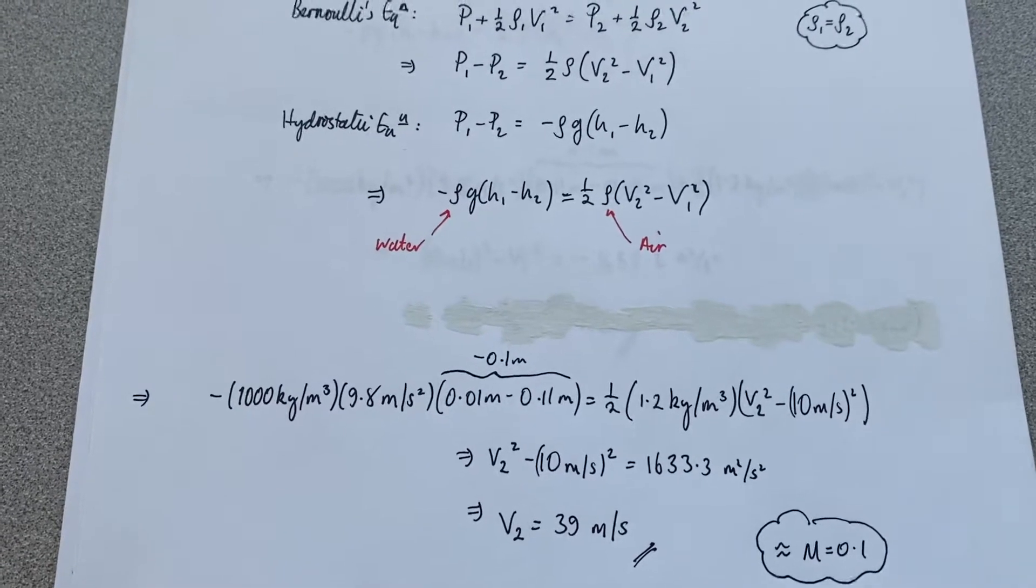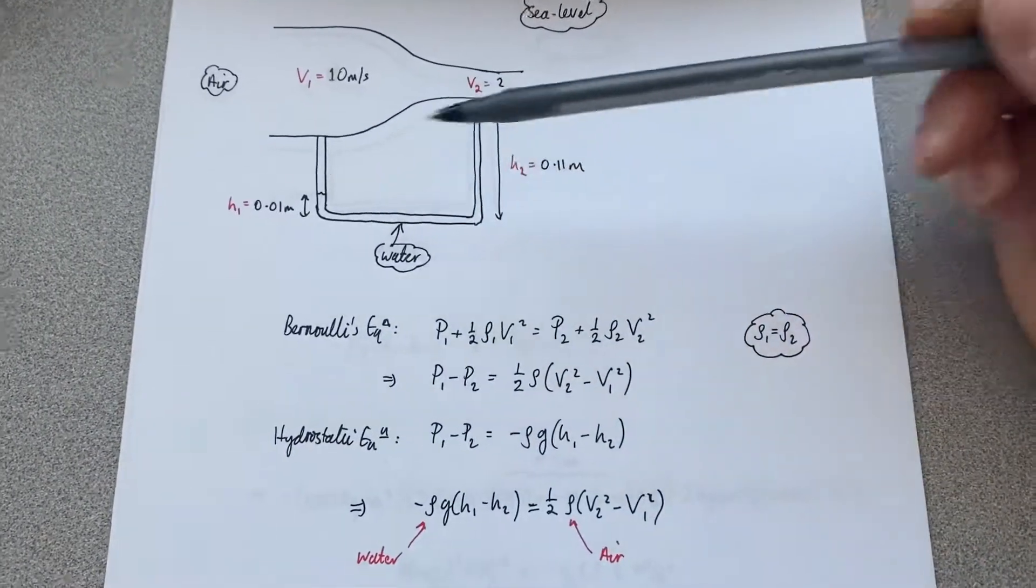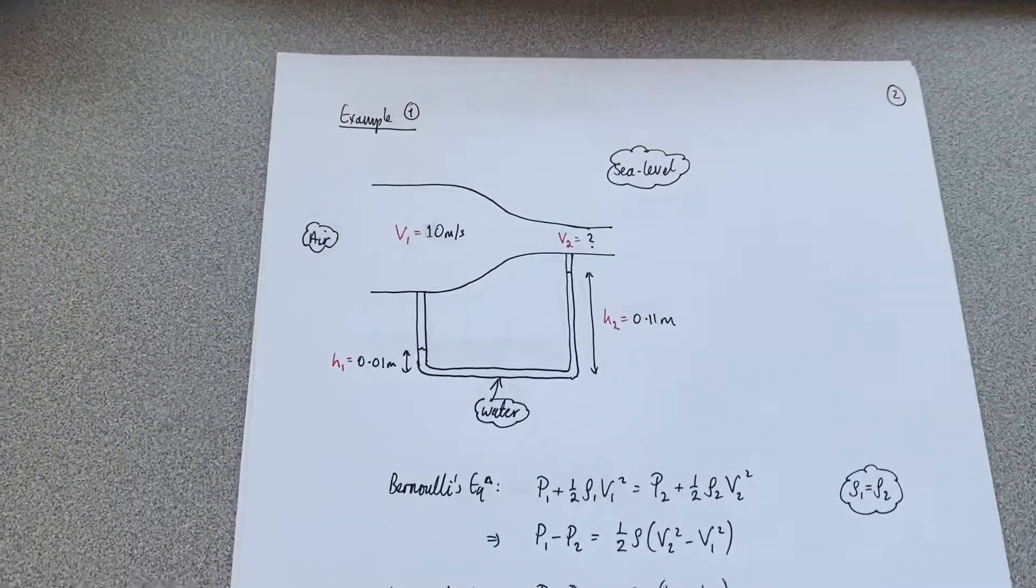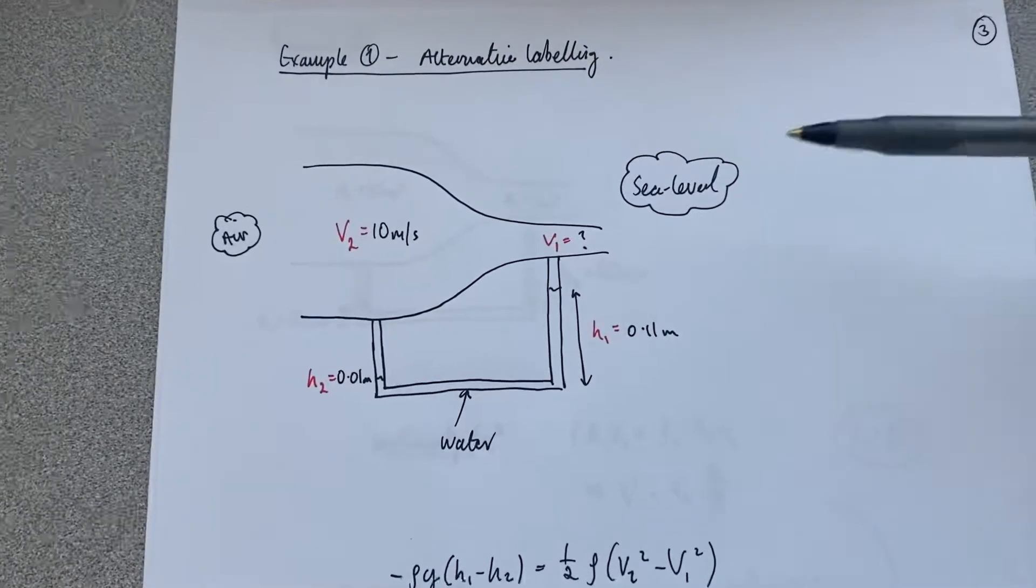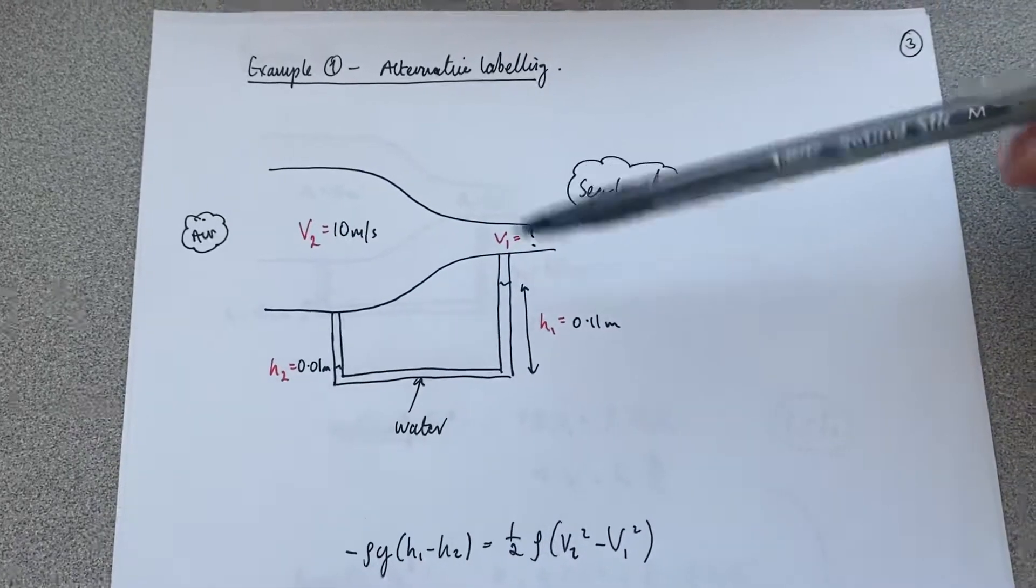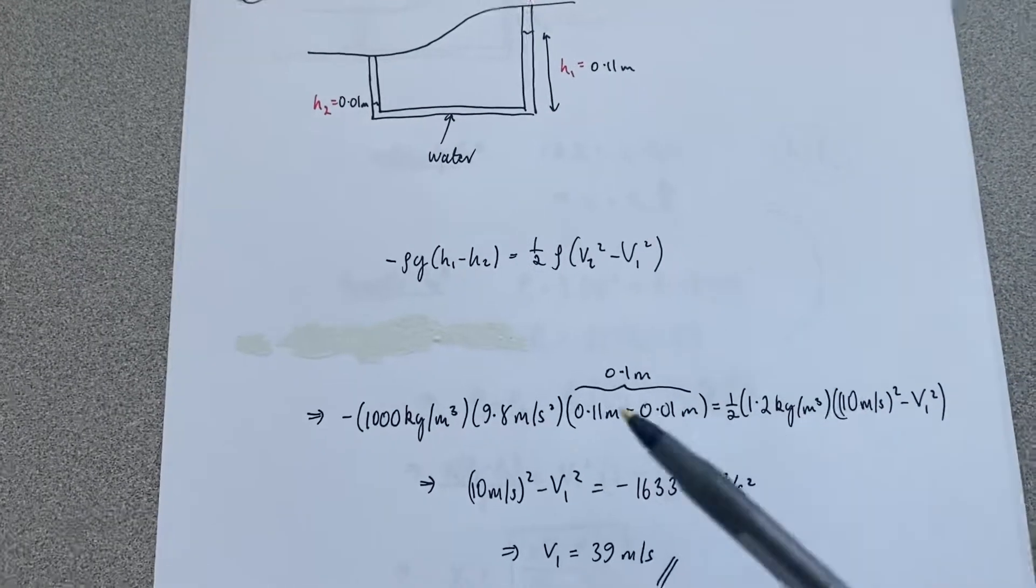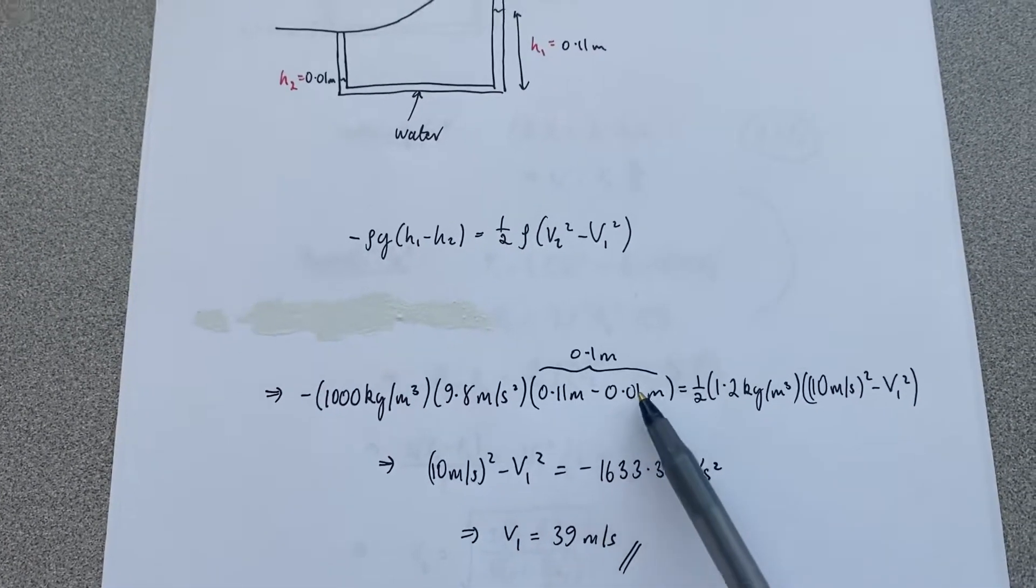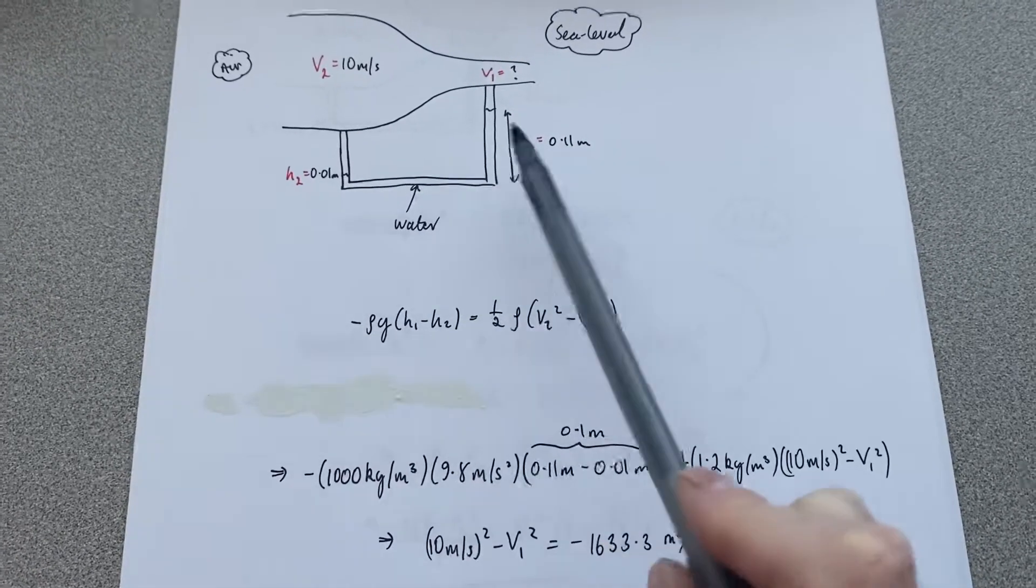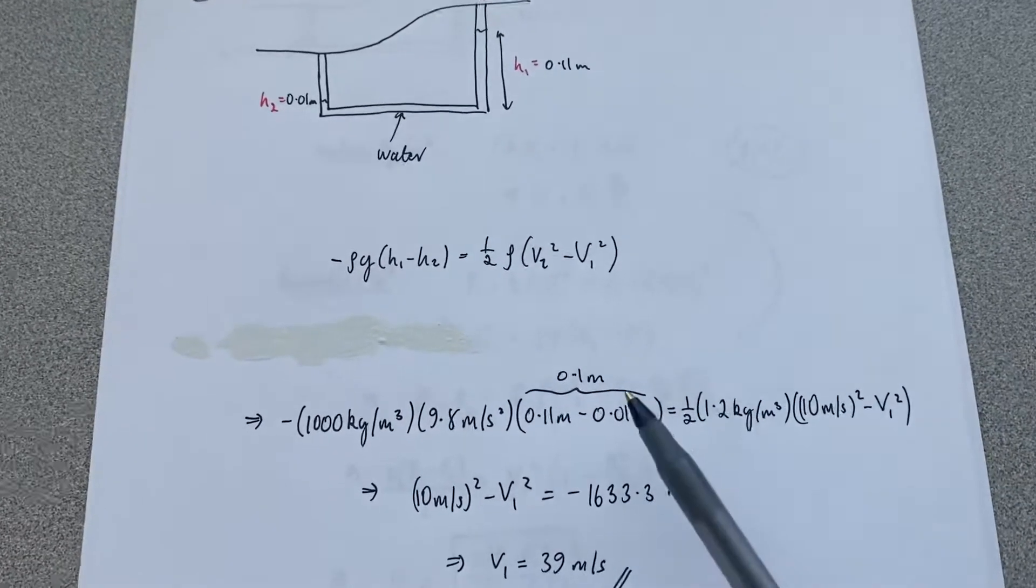Now, just to prove to you that it doesn't matter which way around that you label these, because the negative sign takes care of it, I've basically done the same example again but changed the labels. So now the twos correspond to the settling chamber side and the ones correspond to the test section side. And if you use the same equation again, then obviously this difference now is positive because h1 minus h2 is positive, because the water level is higher on the right-hand side than the left-hand side.